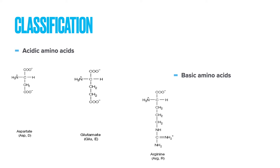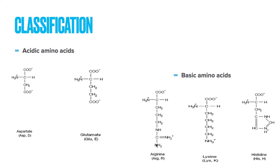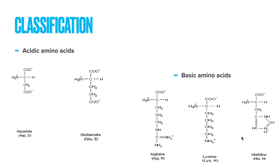We have three basic amino acids: arginine, lysine, and histidine. Arginine and lysine are referred to as strongly basic amino acids, whereas histidine is referred to as weakly basic. Arginine has a guanidinium group with a positive charge, and lysine has an NH3+ group, so both are always positively charged under physiological pH. Histidine has an imidazole group with a pK of 6, and physiological pH is 7.4, meaning some histidine molecules are protonated and some are deprotonated — so it is not 100% positively charged, which is why it is a weakly basic amino acid.